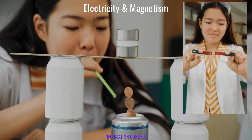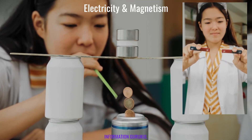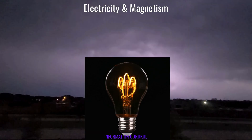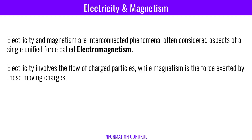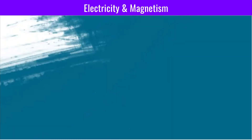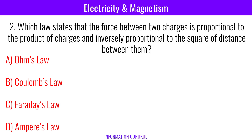Today we will discuss questions and answers on magnetism and electricity. Electricity and magnetism are interconnected phenomena, often considered aspects of a single unified force called electromagnetism. What is the SI unit of electric charge? Coulomb. Which law states that the force between two charges is proportional to the product of charges and inversely proportional to the square of distance between them? Coulomb's law.